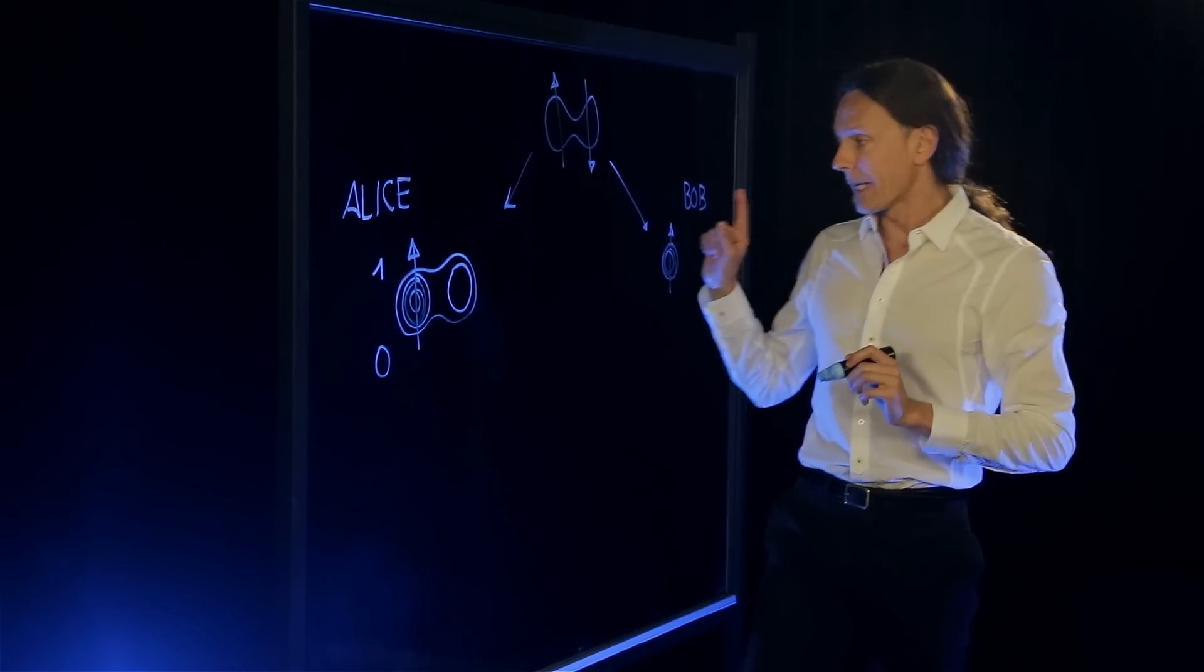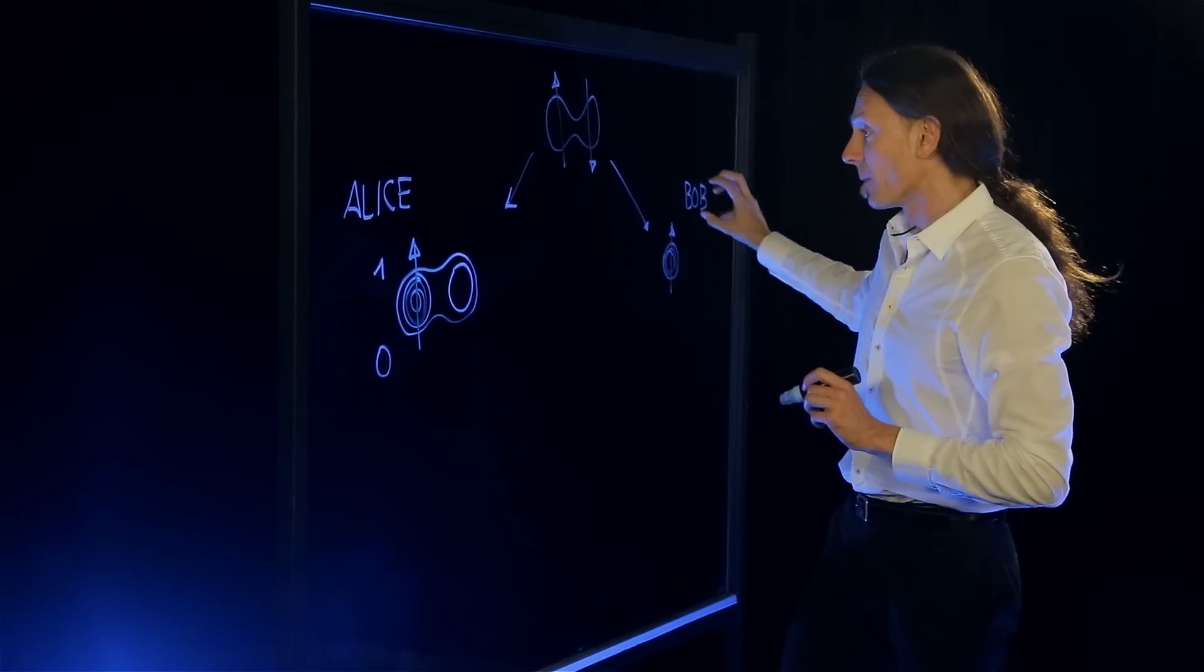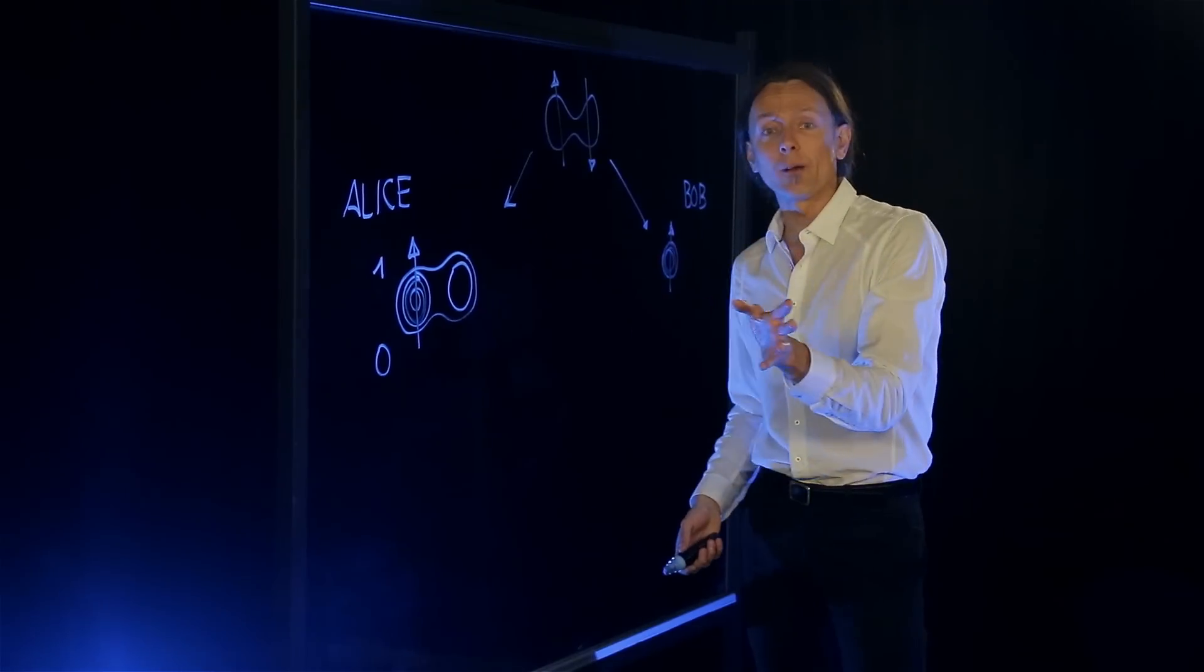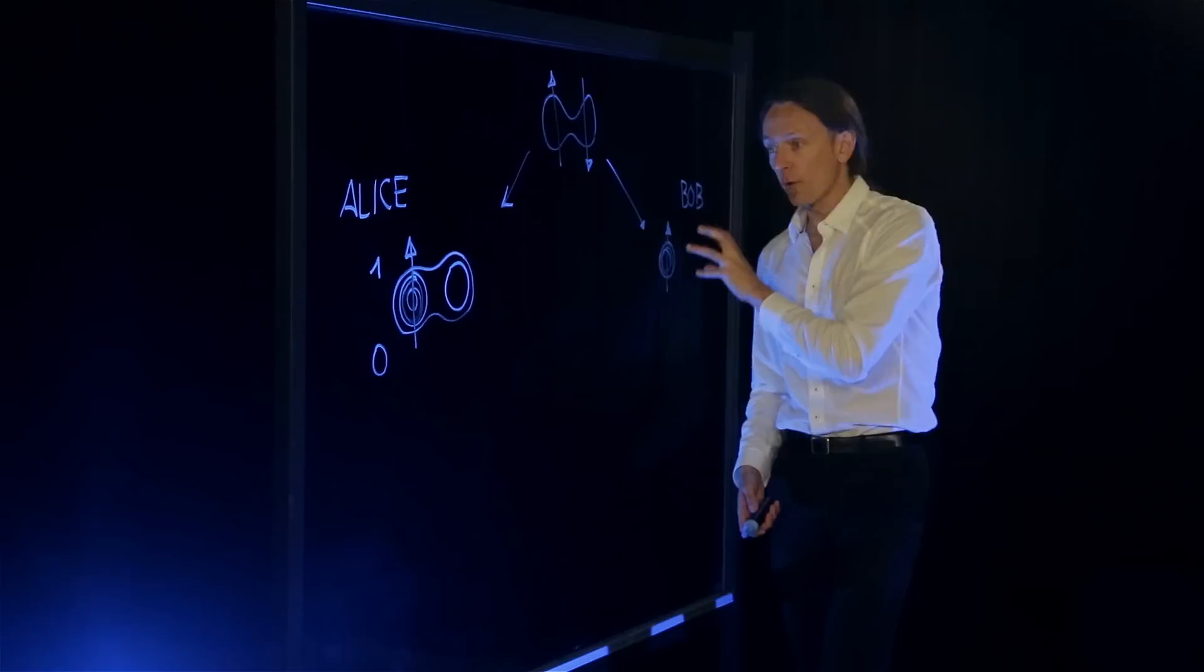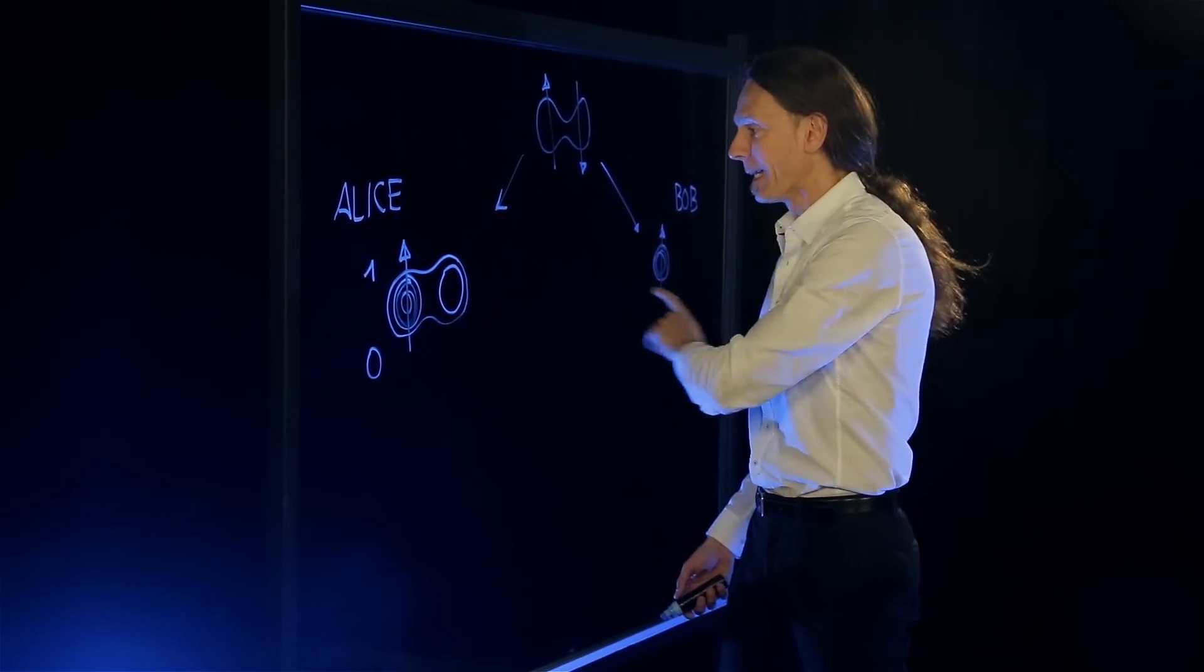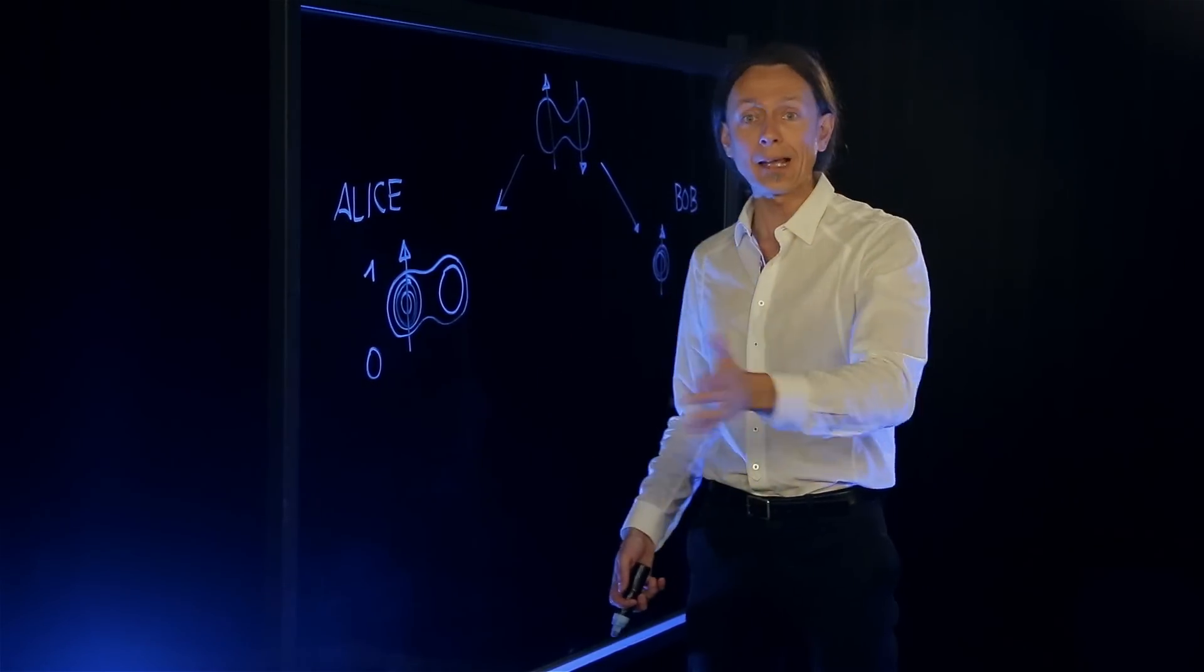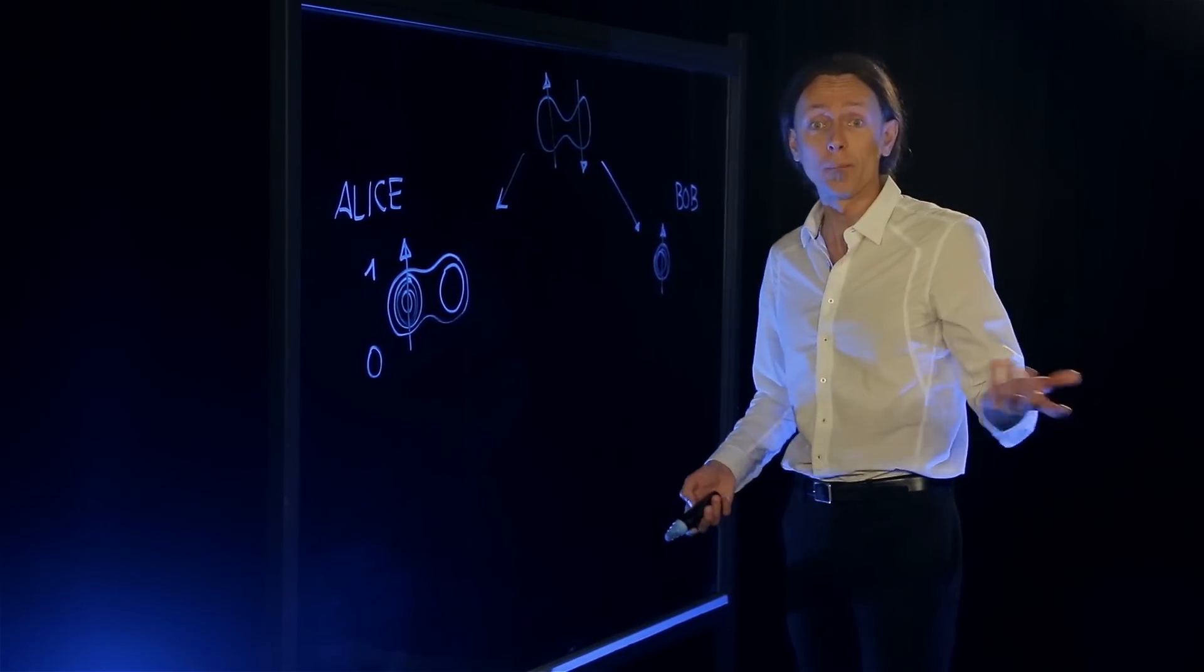Now this is instant. As soon as the measurement is performed, Bob's electron contains the information that was on Alice's electron. The problem is that Bob doesn't know that. This is the reason why this doesn't violate relativity. Bob can only know that this is the information that Alice used to have if Alice tells him that the outcome of her measurement was that the electrons are in opposite state.